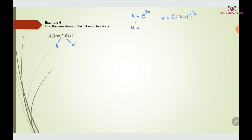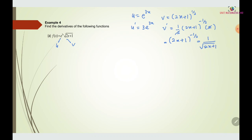We differentiate u and v. So u prime equals 3e to the power of 3x. For v prime, we apply the chain rule: bring down the power, so 1/2 times (2x plus 1) to the power of negative 1 over 2, then multiply by 2. When simplified, v prime equals 1 over the square root of (2x plus 1).